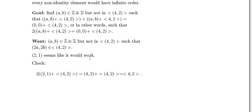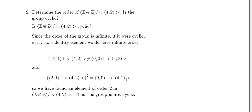Consider a=2, b=1. Then 2(2,1) = (4,2), which is indeed an element of ⟨(4,2)⟩. But (2,1) itself is not in ⟨(4,2)⟩. So we have found an element of order 2 in the quotient group.